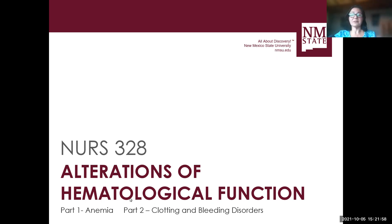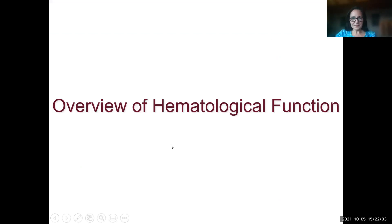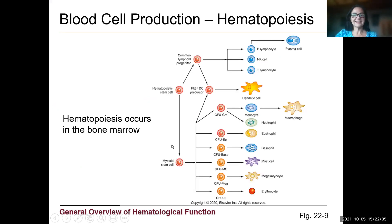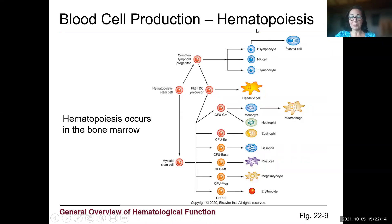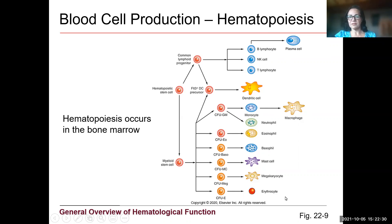But before we get to any of that, we're going to see the overview of how we make some of these cells. This is from the chapter on inflammation and immunity — we talked about hematopoiesis, that's the formation of blood cells. This happens in the bone marrow, of course. There were two main lines: the lymphoid line that gave rise to all those lymphocytes, and the myeloid line that gave rise to a lot of the cells of inflammation.